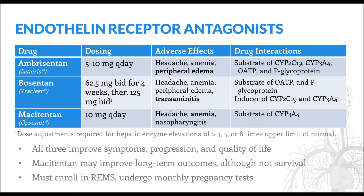The endothelin receptor antagonists include ambrisentan, bosentan, and macitentan. All three improve symptoms, disease state progression, and quality of life, and macitentan has also been associated with improvements in long-term outcomes, although this endpoint was driven primarily by improvements in time to clinical worsening and not survival. The three agents have a similar side effect profile, which includes headache, anemia, and peripheral edema. Edema appears to be worse with ambrisentan, and anemia worse with macitentan. Bosentan is also associated with transaminitis that requires frequent monitoring of liver function tests. Because of their complex interactions with the CYP450 enzyme system and other proteins, the endothelin receptor antagonists must be closely observed for drug-drug interactions. Finally, because of their teratogenicity, all three agents require that patients enroll in a REMS monitoring program.